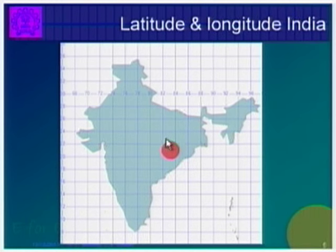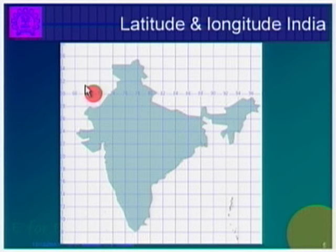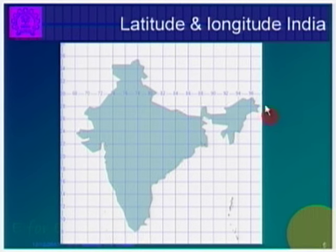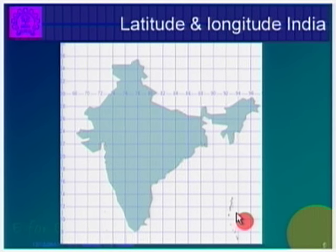These are the various latitudes and longitudes in India. For example, the south-west point is at 8° latitude and it goes to about 35° north. The longitudes vary from about 68° to 96°. So whenever we talk about any location and want to find out the angle of PV module tilt, we need to know the latitude.